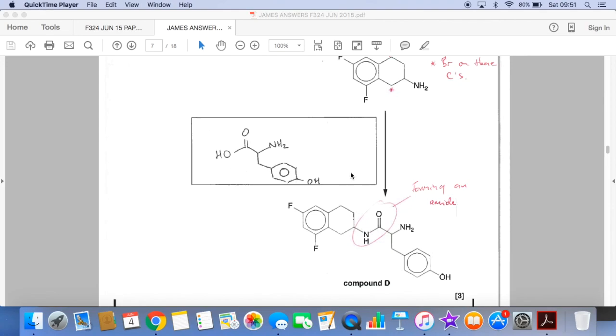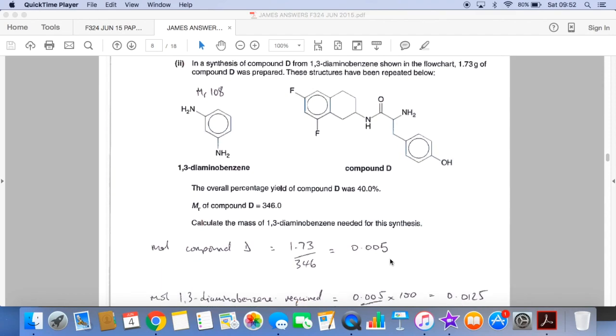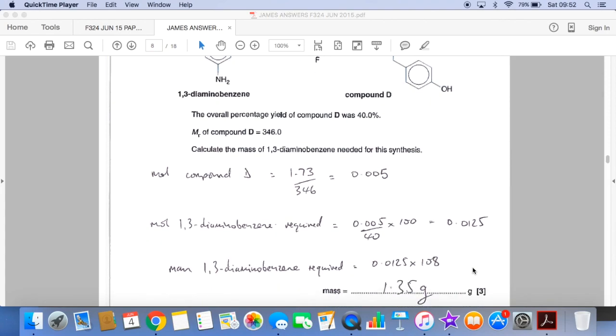So the calculation now. So the first thing you would do, calculate the moles of compound D that's going to be prepared. So that's mass over MR, 0.005. The moles of 1,3-diaminobenzene required, factoring in that 40%, well, I've divided by 40 and then scaled up to 100%. So we're going to need these moles here and then to get the mass, I just multiply by the MR, which is 108 and it gives an answer of 1.35 grams.